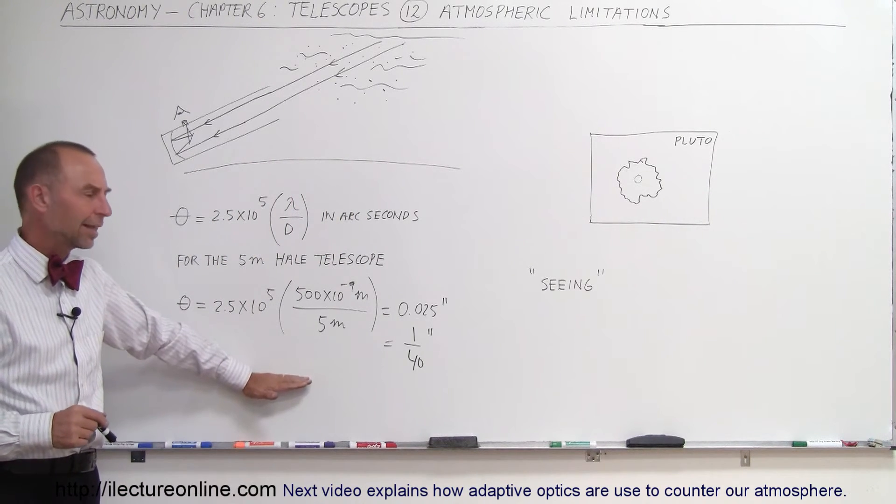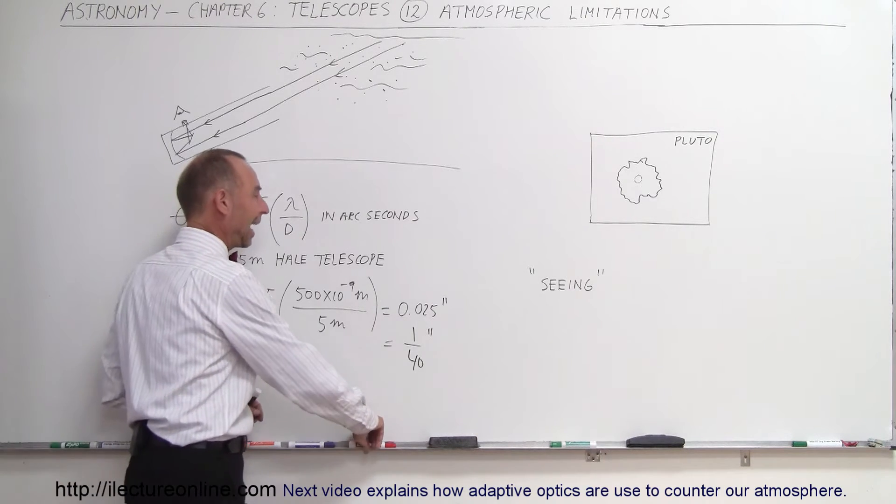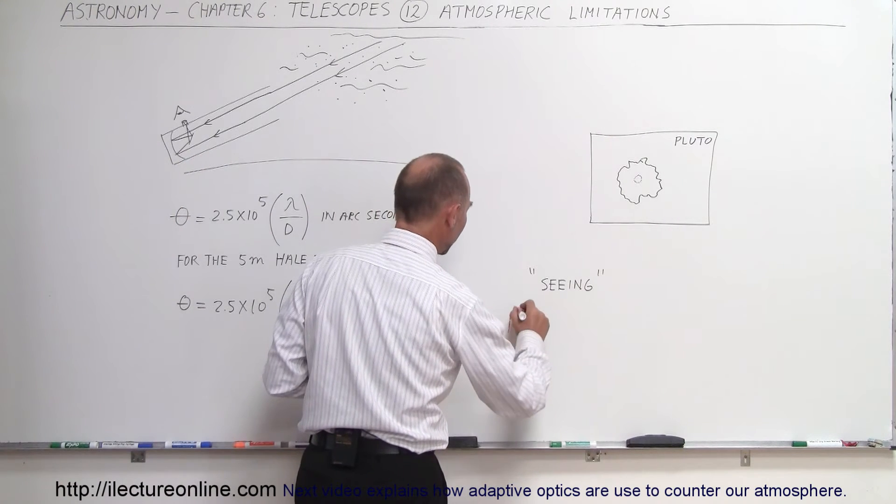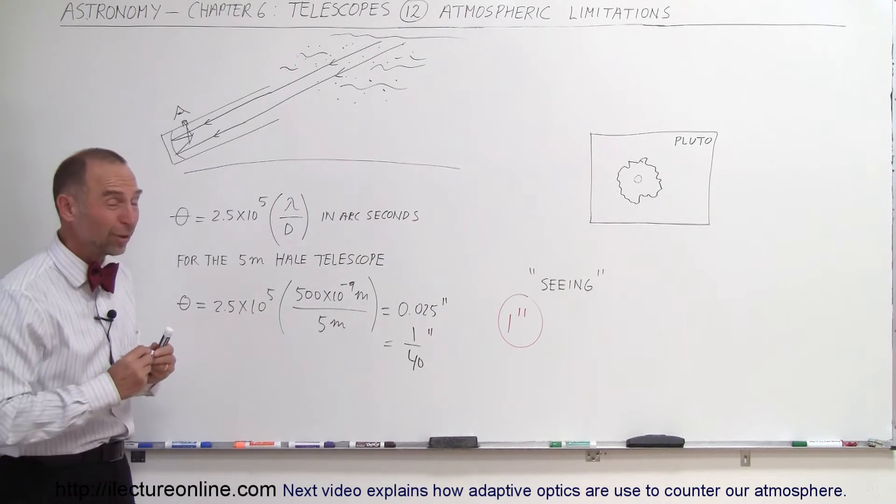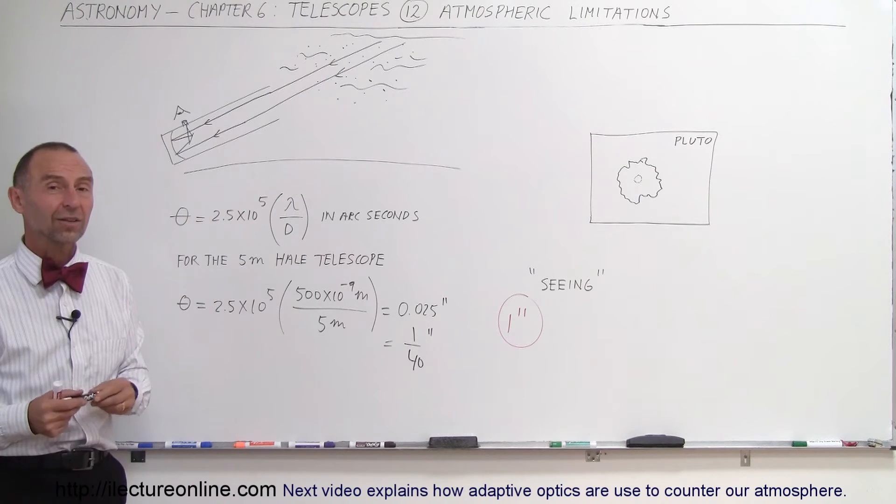The atmosphere, at its best conditions, limits us to about 1 arc second. And when the conditions aren't as good, when the seeing is not as good, it may be 2 or 3 arc seconds.